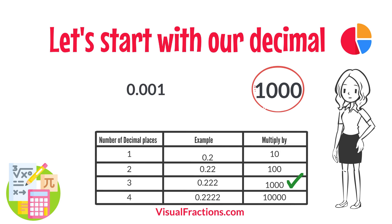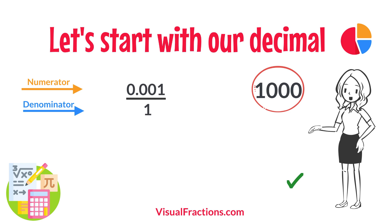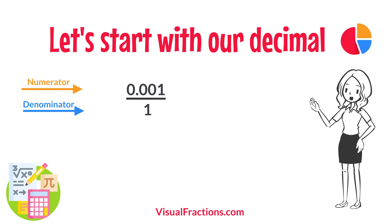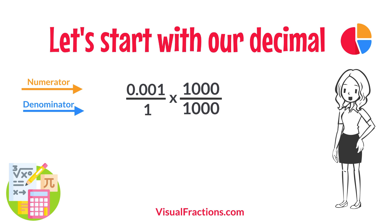To convert this decimal into a fraction, you initially put it over 1, essentially treating the decimal as the numerator in a fraction where the denominator is 1. This sets up the conversion process where we multiply both the numerator, the decimal, and the denominator, 1, by 1,000 because there are three decimal places.